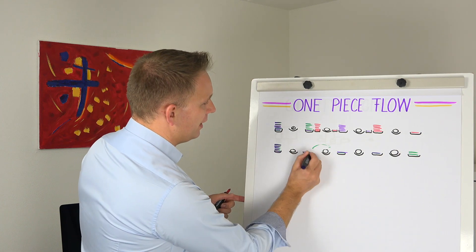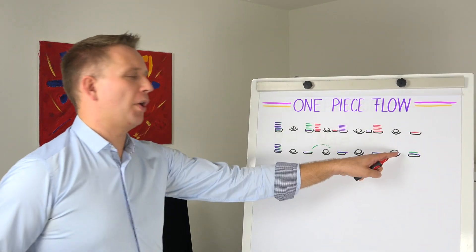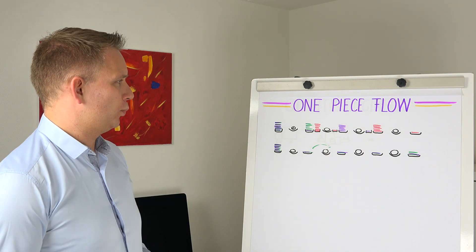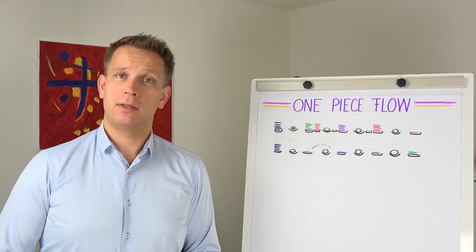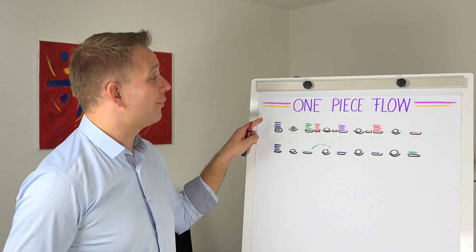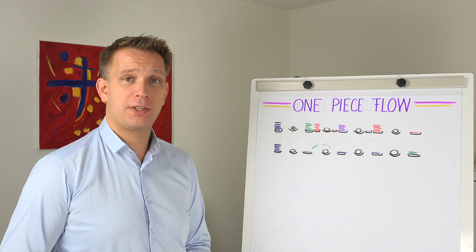So what does our first tact then look like? So what we have is that in the main system one of these raw materials does go over but also at the same time one of these. So after the first tact we sort of already finished our first product.